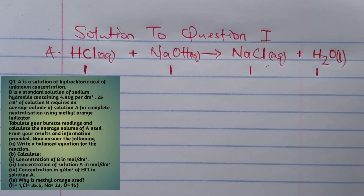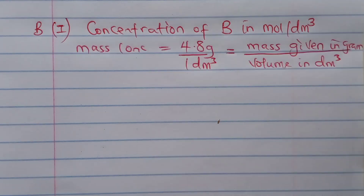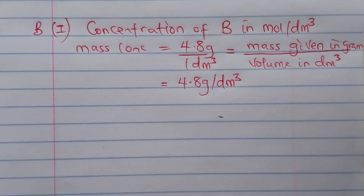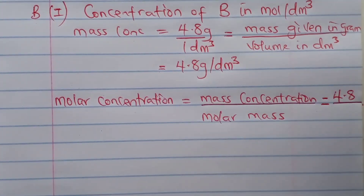Now let's go for question BI. Question BI asks us to calculate the concentration of B in mole per dm³. The mass of solution B given to us is 4.8 grams in 1 dm³. The mass concentration is mass of the solute in grams over volume of the solution in dm³. There is a relationship between mass concentration and concentration in mole per dm³. Inserting the values, we have 4.8 over 40.